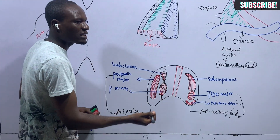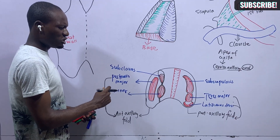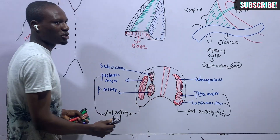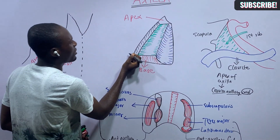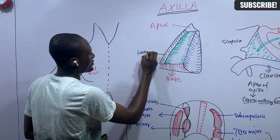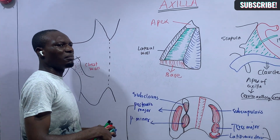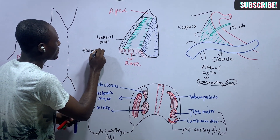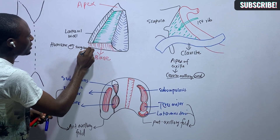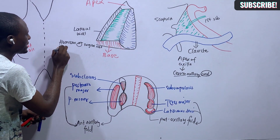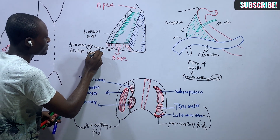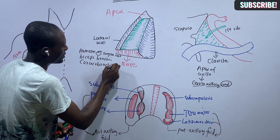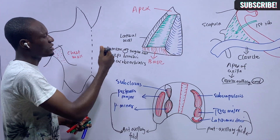The posterior axillary fold is formed by the teres major twisting around the glistening tendon of the latissimus dorsi. The lateral wall of the axilla is formed mainly by the humerus at the region of the surgical neck, along with the tendon of the biceps brachii muscle and the coracobrachialis — these form the lateral wall of the axilla.